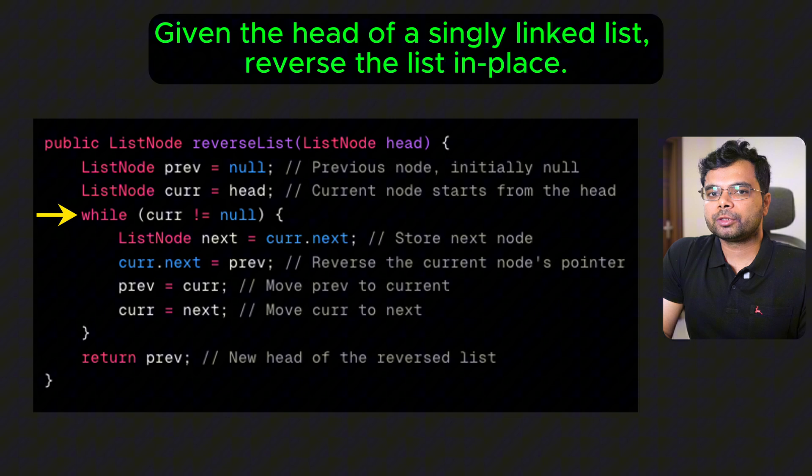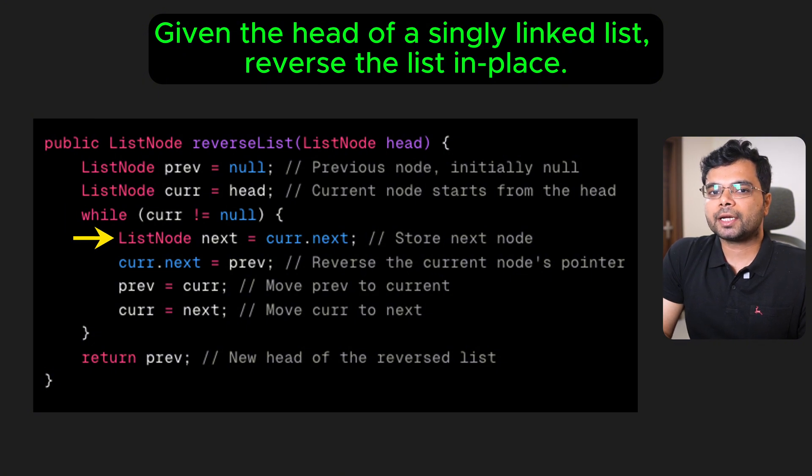through the list while current is not null, which means until we reach the end of the list. Save the next node by setting next to current.next. Reverse the current node's pointer by setting current.next to previous. And move previous to current and current to next for the next iteration. Once the loop finishes,